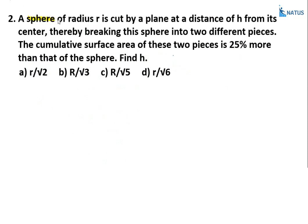Second question: A sphere of radius r is cut by a plane at a distance h from its center, breaking the sphere into two different pieces. The cumulative surface area of these two pieces is 25% more than that of the sphere. Find the value of h.